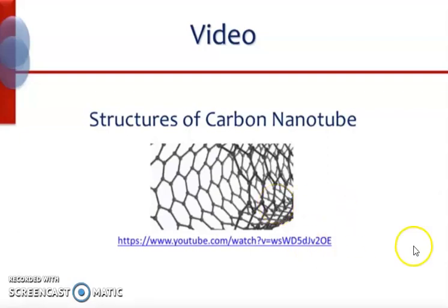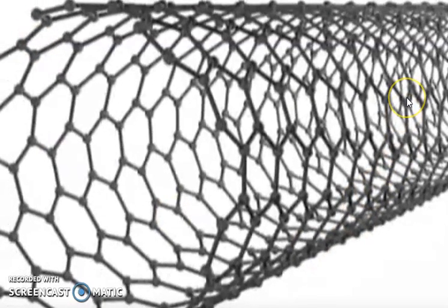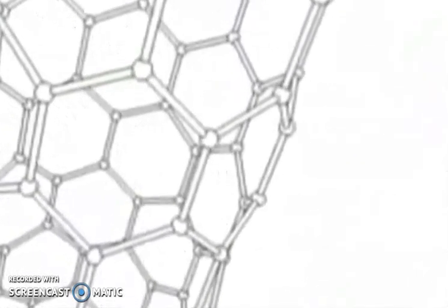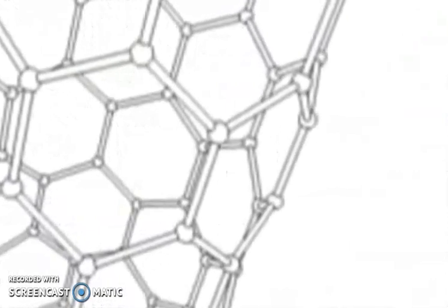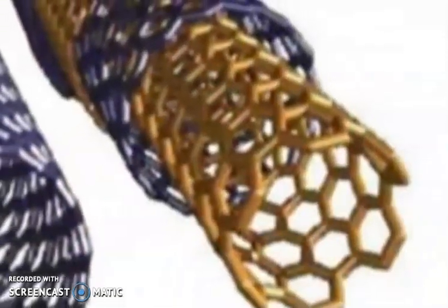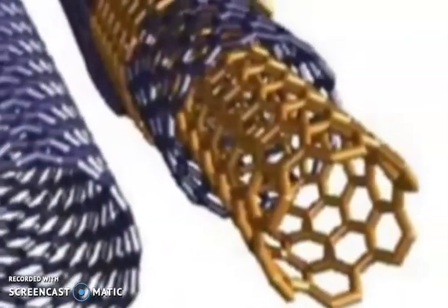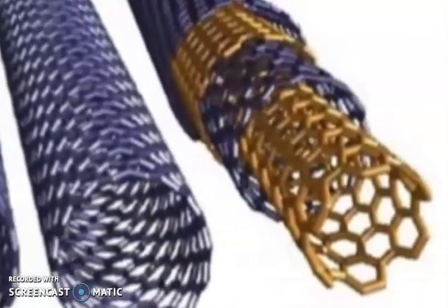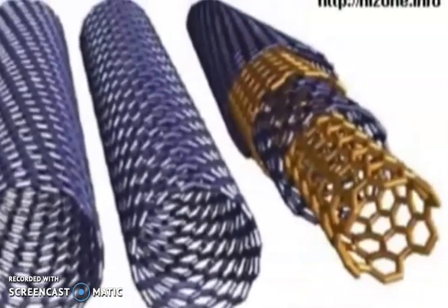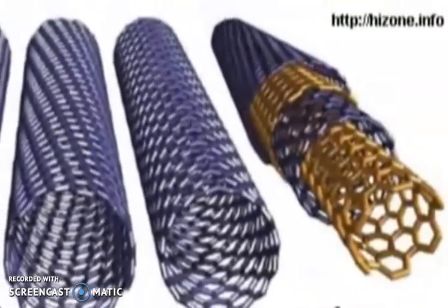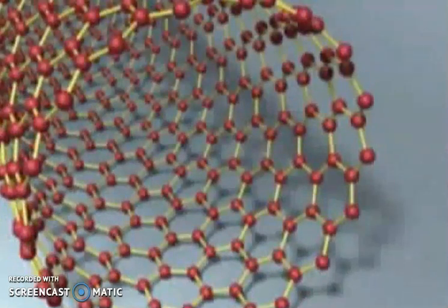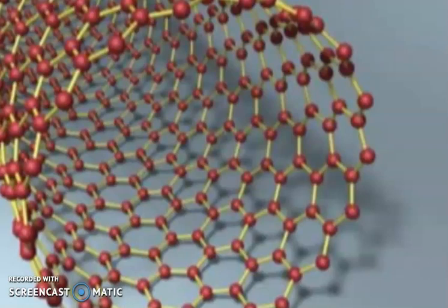This animation summarizes the structure of carbon nanotubes. Carbon nanotubes are cylindrical elongated structures with a diameter of 1 to a few nanometers. They consist of one or more graphene planes rolled into a tube with hemispherical caps. The base specification of nanotubes is defined by folding the graphene sheet.